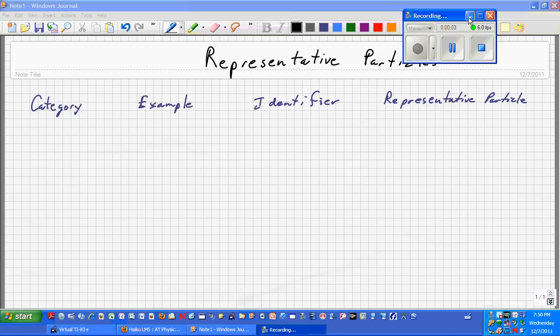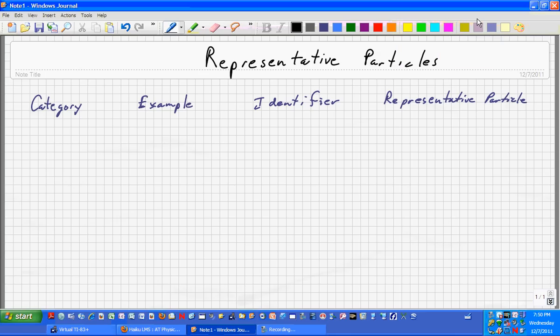I'd like to clarify a little bit on representative particles. Essentially we've got four categories that we have to worry about.